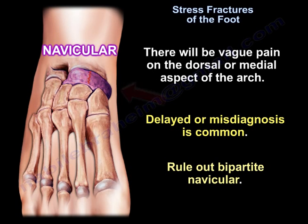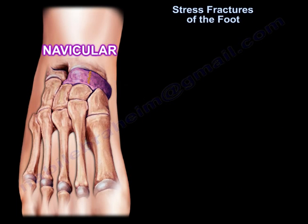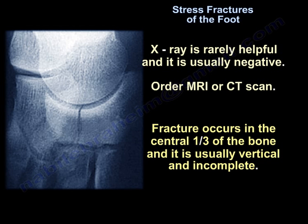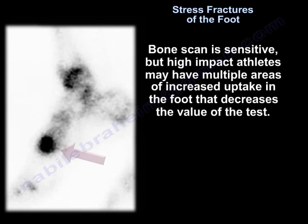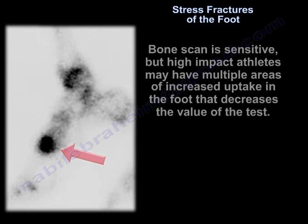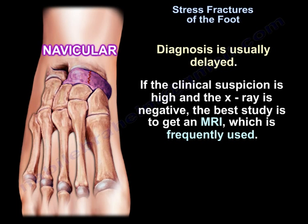There will be vague pain on the dorsal or medial aspect of the arch. Delayed or misdiagnosis is common. Rule out bipartite navicular. The x-ray is rarely helpful and usually negative — order MRI or CT scan. The fracture usually occurs in the central third of the bone and is typically vertical and incomplete. The bone scan is sensitive, but high-impact athletes may have multiple areas of increased uptake, decreasing the value of the test. If clinical suspicion is high and the x-ray is negative, the best study is MRI.